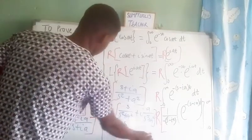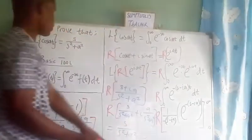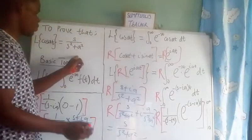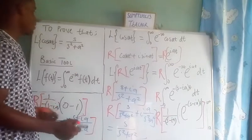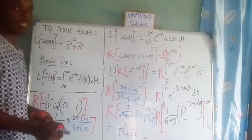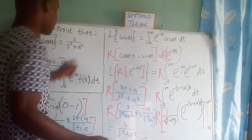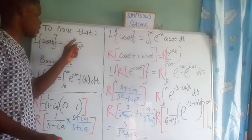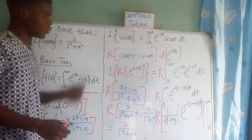And that's it. We have successfully proven that the Laplace transform of cosine(at) is equal to s over s squared plus a squared.